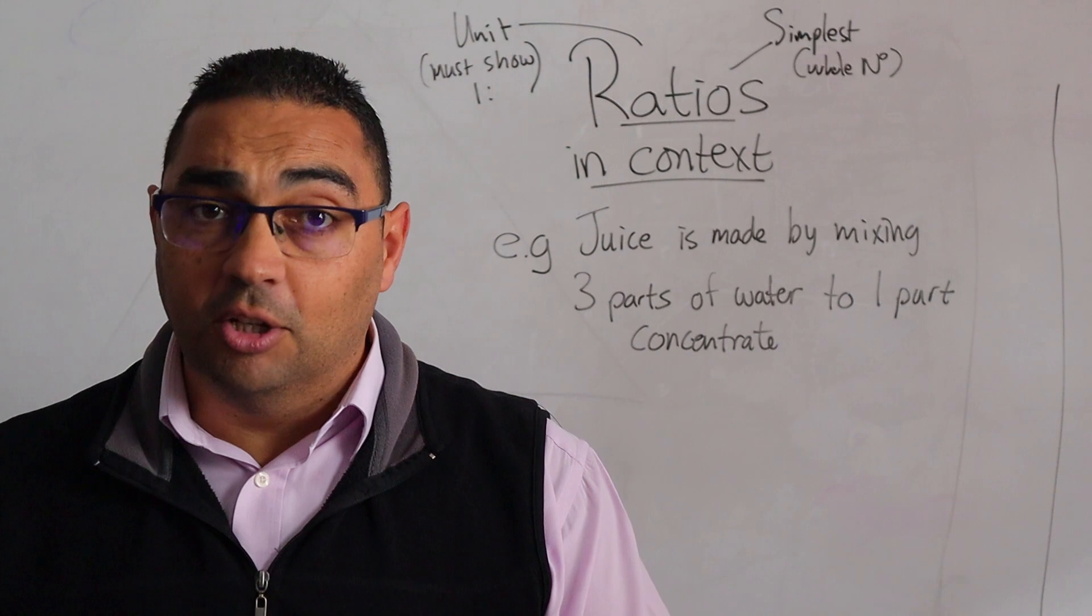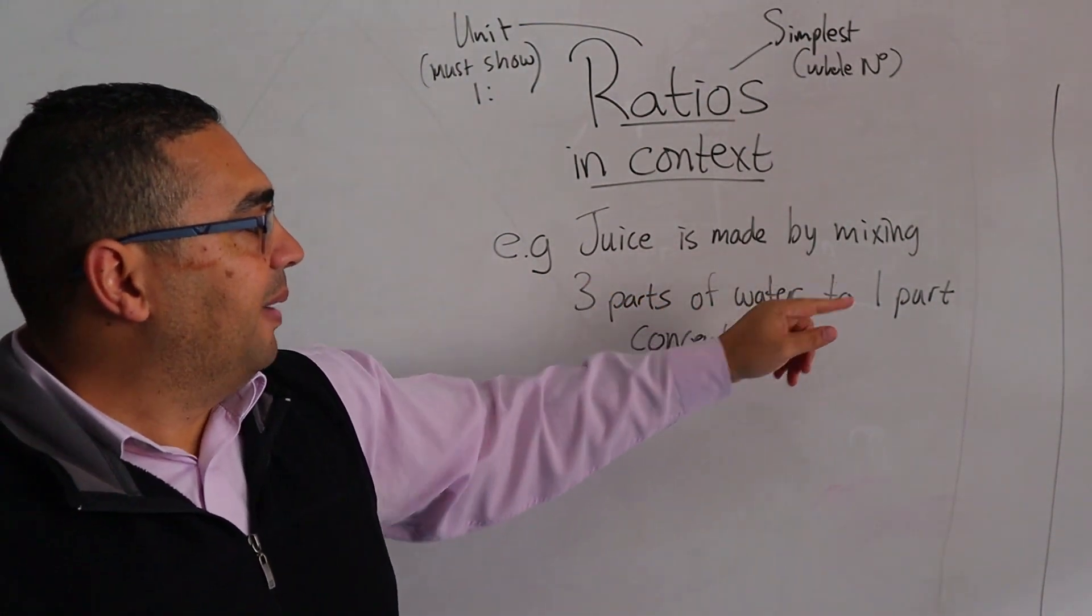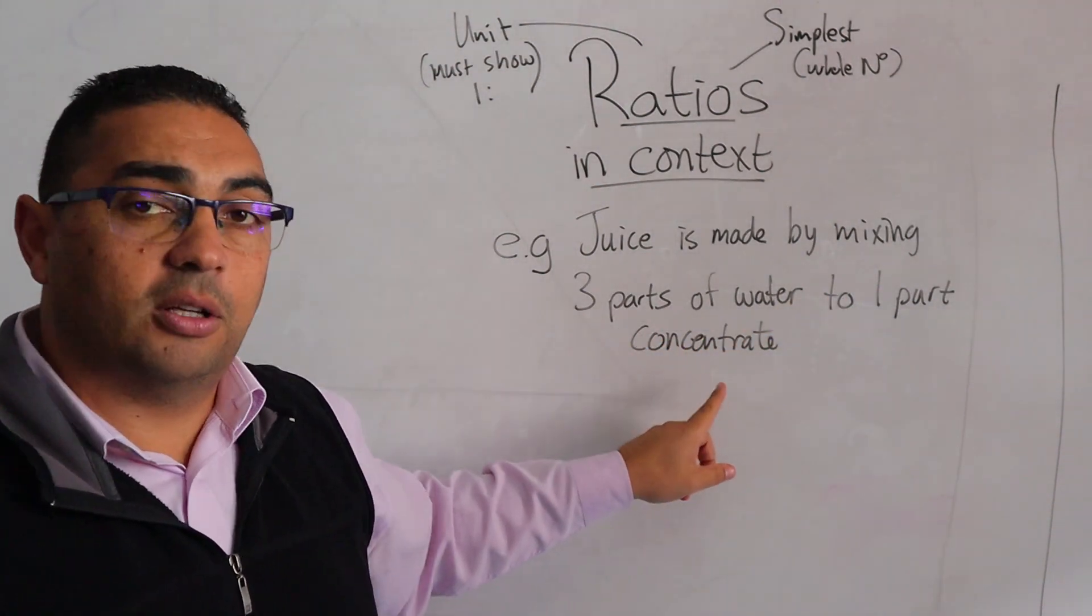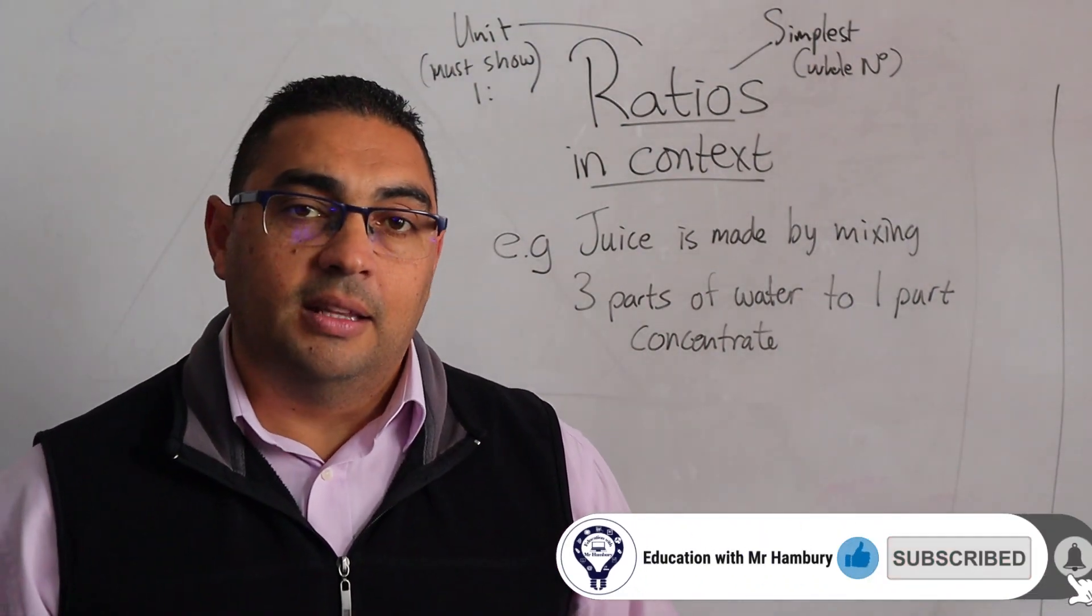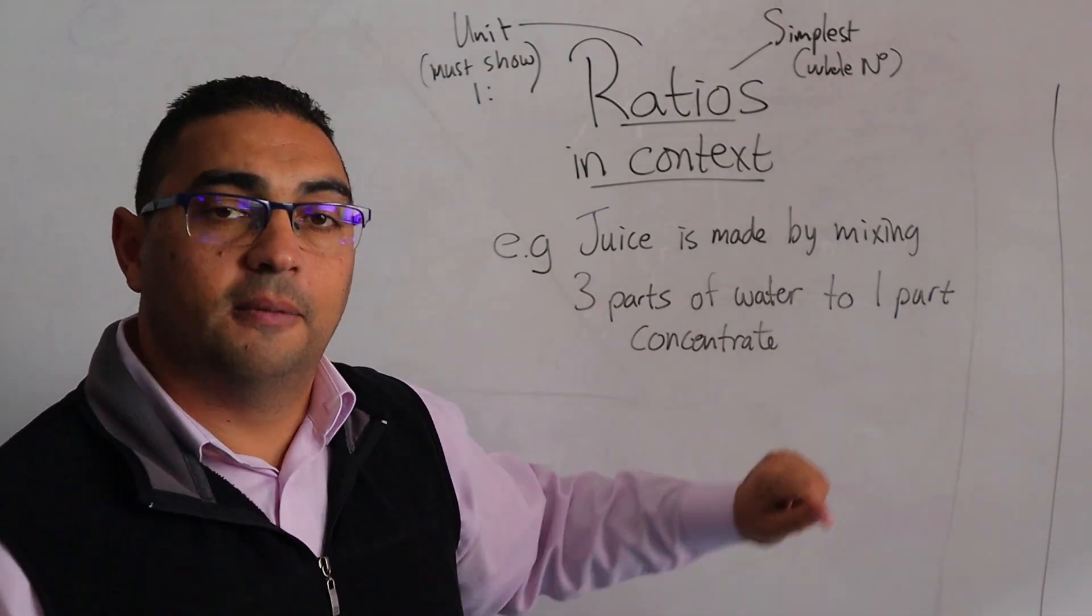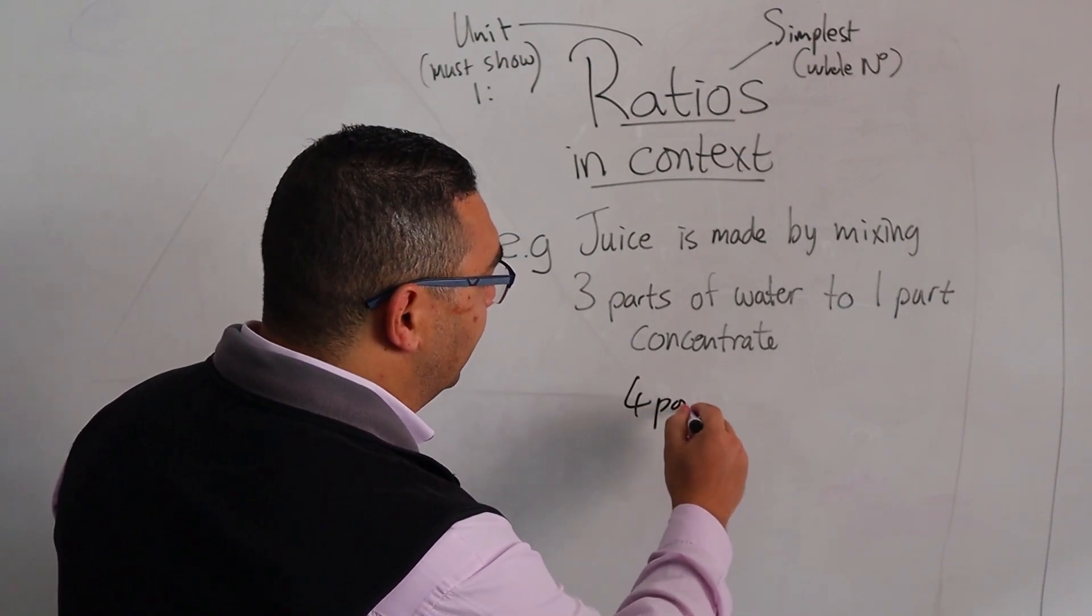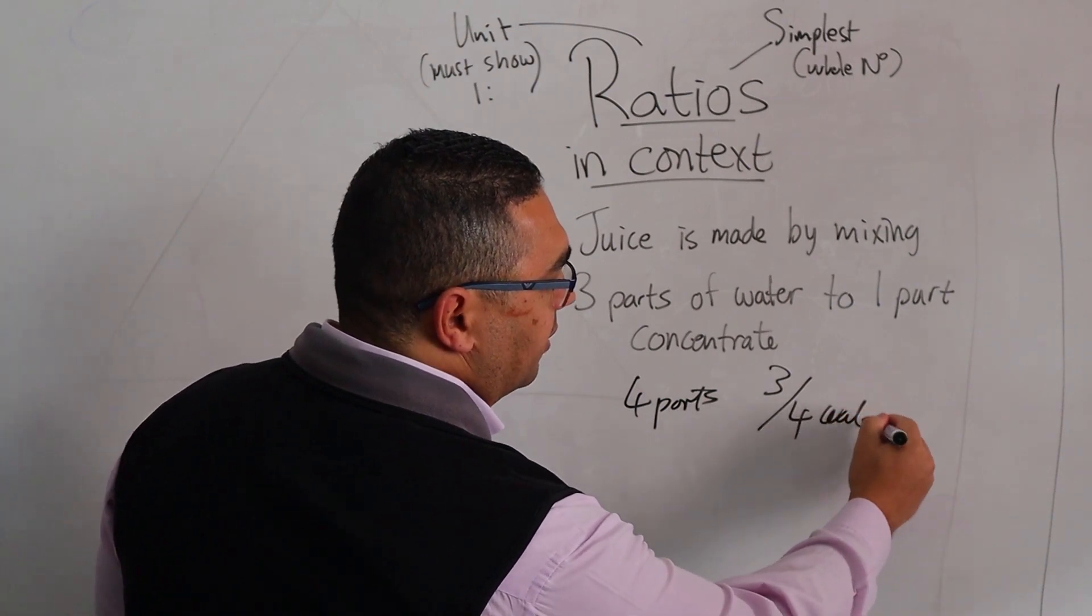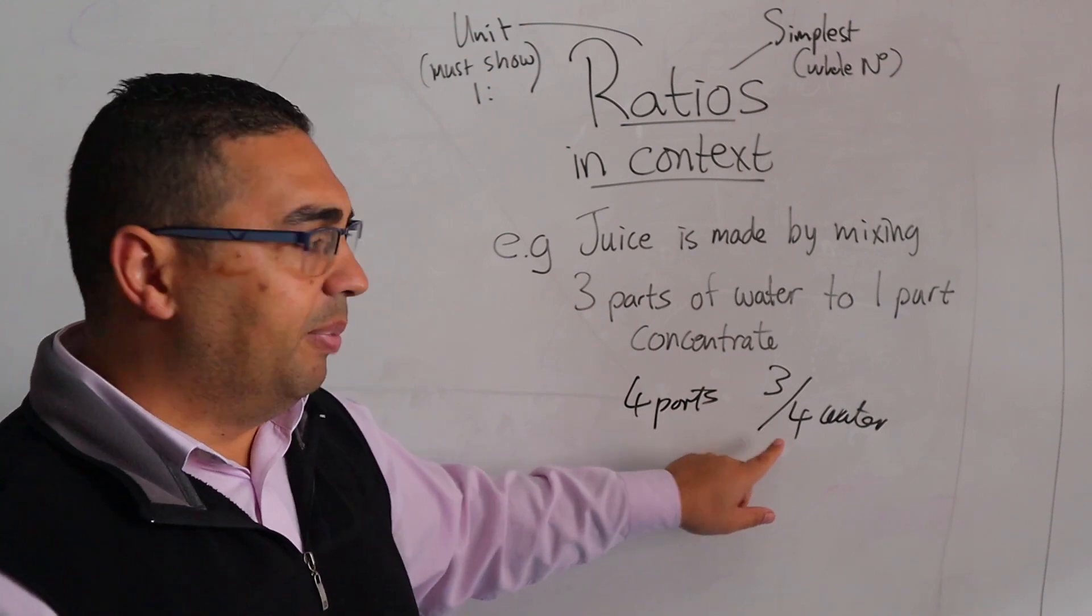Let's look at the one we have. Juice is made by mixing three parts of water to one part of concentrate. So what are they actually saying to us? They are basically saying that there are four parts altogether and three of those four parts are water.